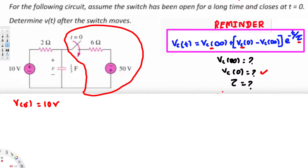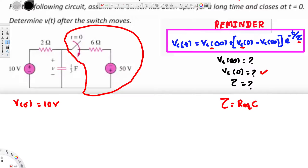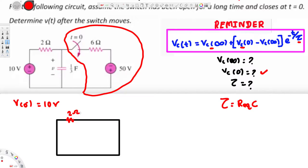Now let's find the time constant. To find τ we need the equivalent resistance R_eq, and the capacitance is already given so we don't need to worry about that. For R_eq we find the Thevenin resistance seen by the capacitor. To do this, we short-circuit the voltage sources. The redrawn circuit has a 2 Ω resistor and a 6 Ω resistor, with the capacitor (1/3 F) across them.